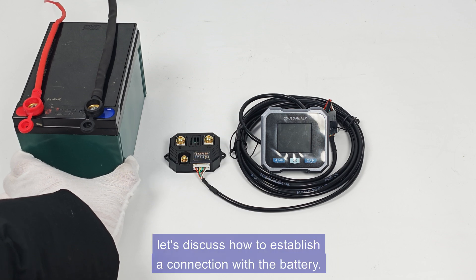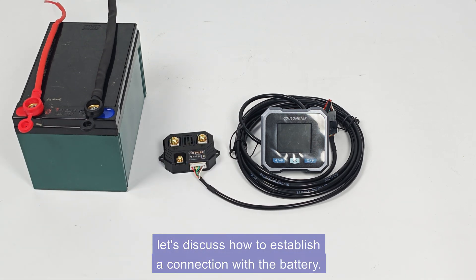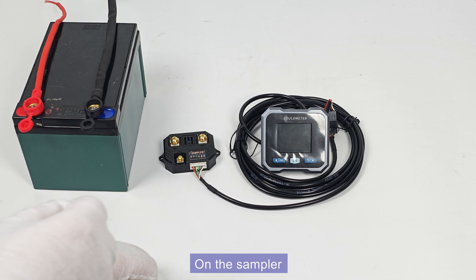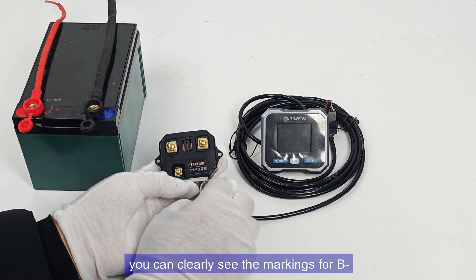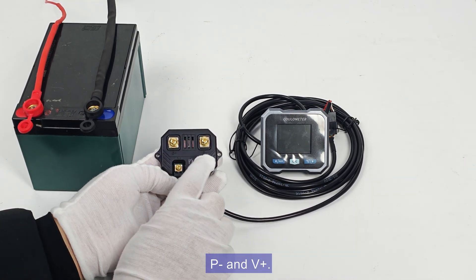Next, let's discuss how to establish a connection with the battery. On the sampler, you can clearly see the markings for B, P and V+.